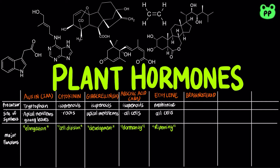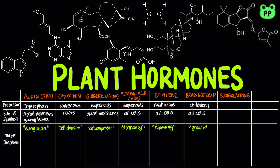Brassinosteroids are plant steroid hormones derived from cholesterol. They are synthesized in all cells and mainly function in growth. Strigolactones are derived from carotenoids and are synthesized in roots in response to decreased phosphate or increased auxin. They mainly function in attraction of mycorrhizae, which is the symbiotic association between fungi and roots.